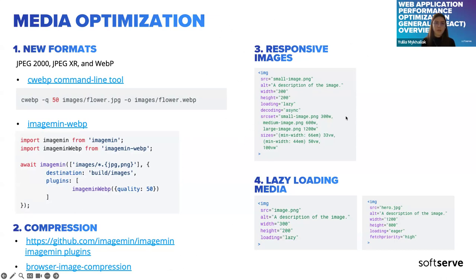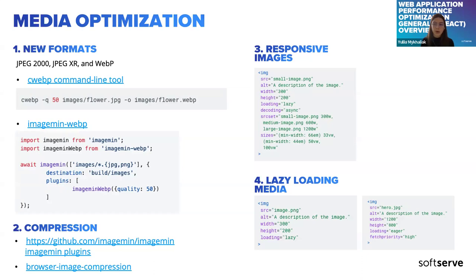For responsive images, use the srcset attribute — which defines a set of images allowing the browser to choose between them based on image width — and the sizes attribute, which defines media conditions (e.g., screen width) to indicate what image size to use. For lazy loading media, use the loading="lazy" value for below-the-fold images; the browser won't load them until the user scrolls close enough. You can also use the fetchpriority attribute to allow important images to be fetched ahead of time.